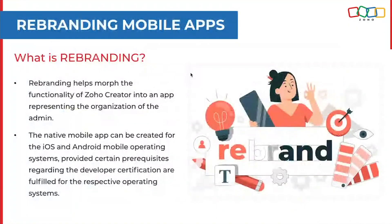Now let's come to the main topic: what is rebranding? You'll be able to personalize mobile applications with the icon of your choice and publish it to the App Store or Play Store — that is what rebranding is. Rebranding helps you morph the functionality of the Creator app into an application representing your organization. Native apps can be created for both iOS and Android operating systems provided certain prerequisites are configured in the backend. This allows you to showcase your brand on all of your users' devices.